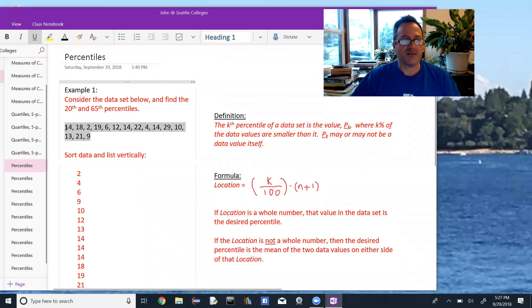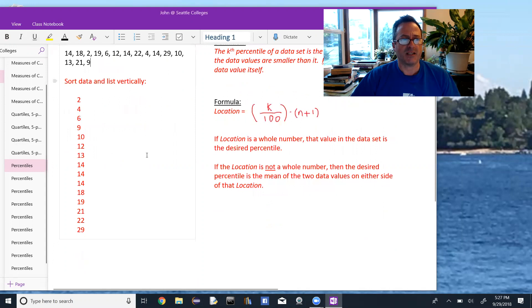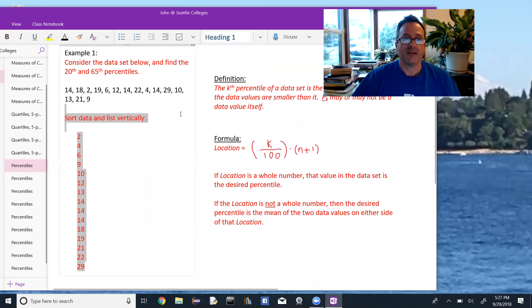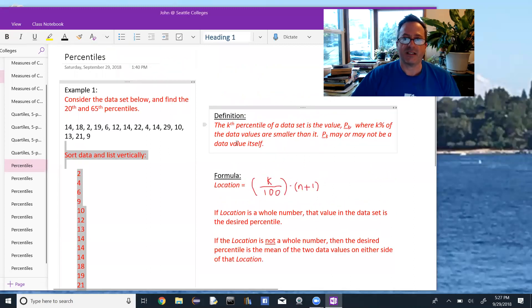So again, it's the same set of numbers we had before and we begin by sorting and listing the data vertically. Kind of always the first step. Then, what is the kth percentile of a data set?